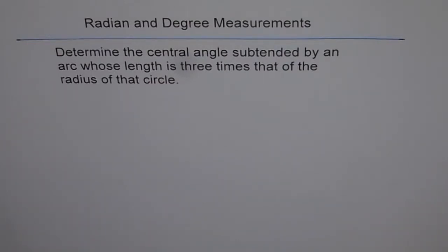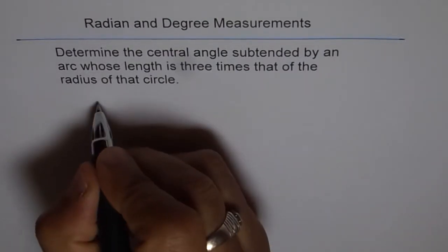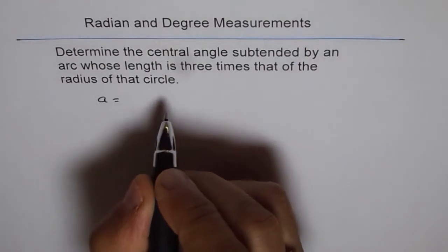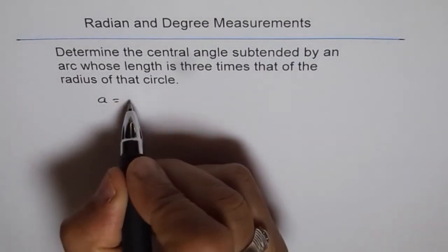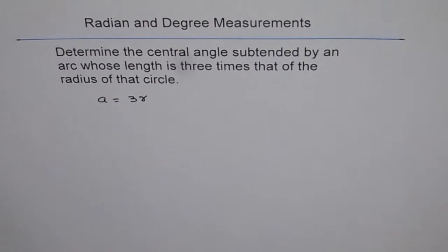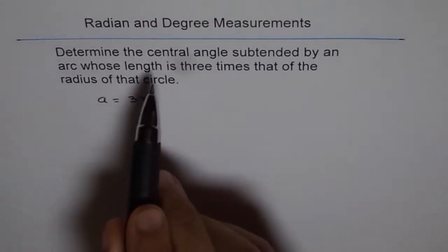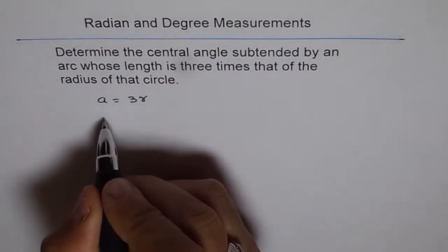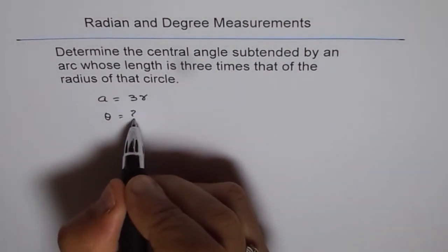So what is the central angle? What we say is A equals three times that of the radius, three times R. That is what is given to us. And you have to find the central angle, that is theta. Theta is not known to us.